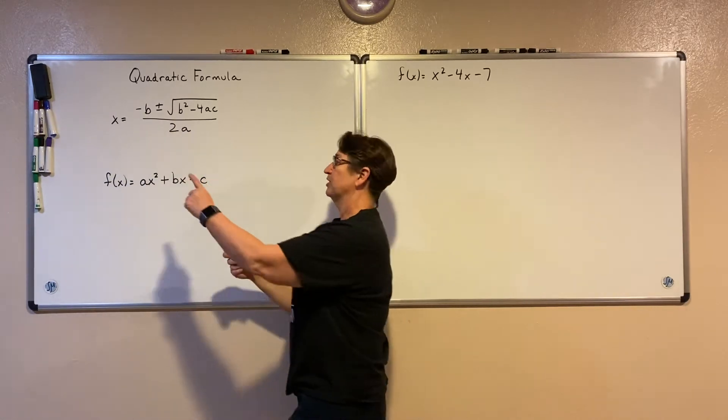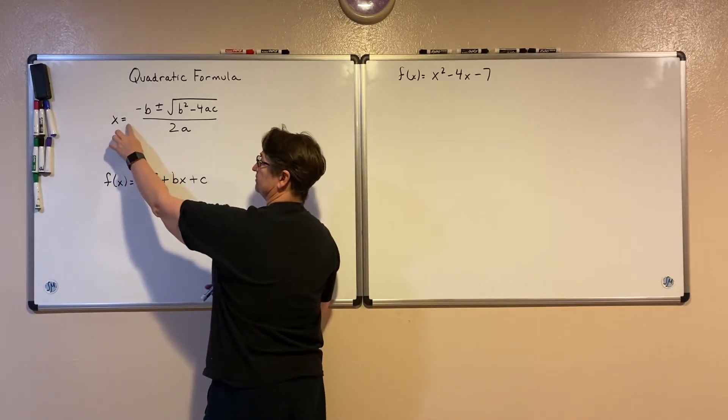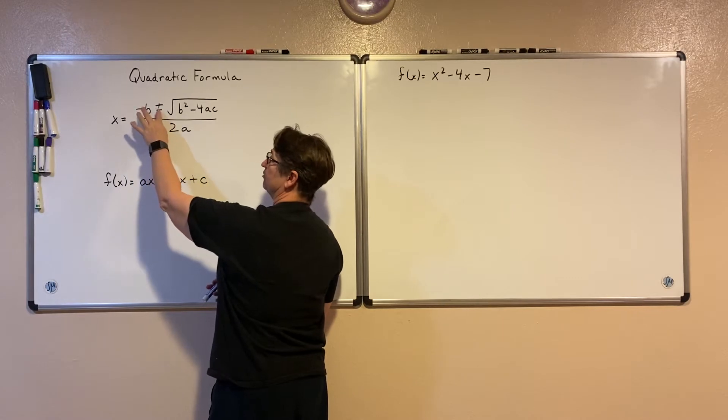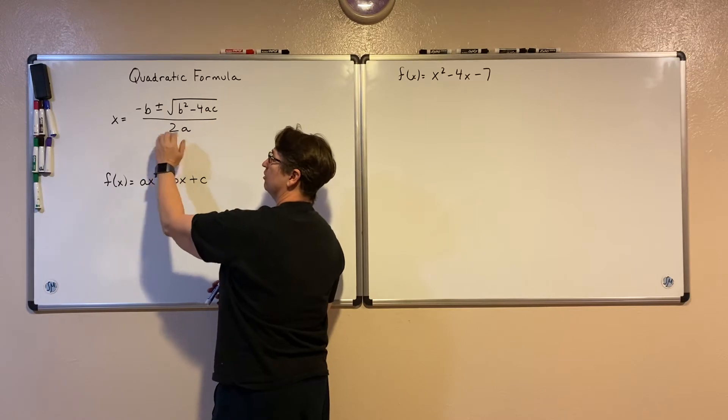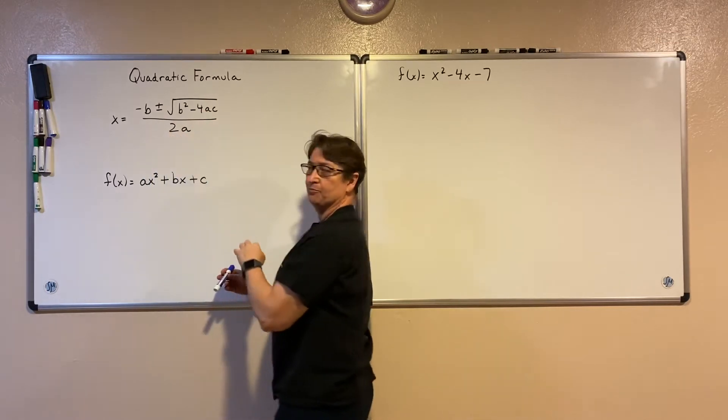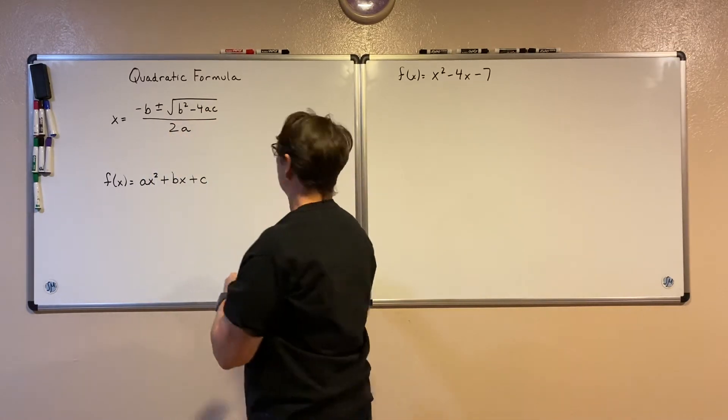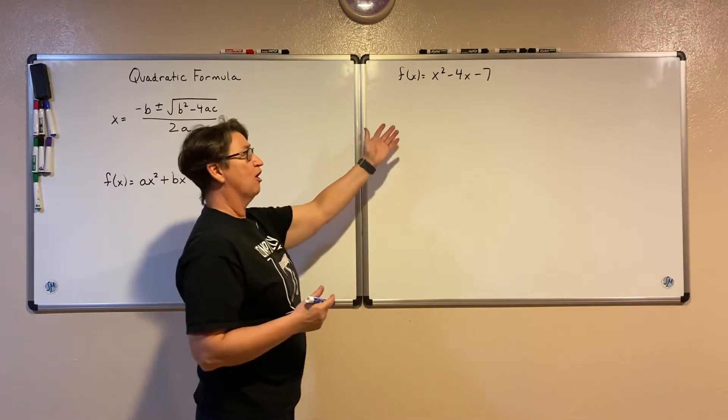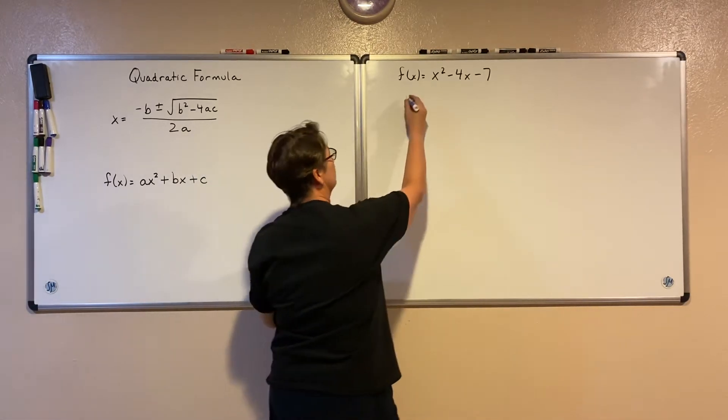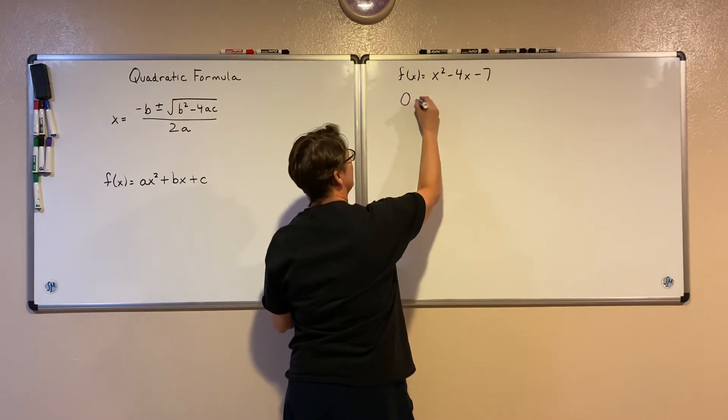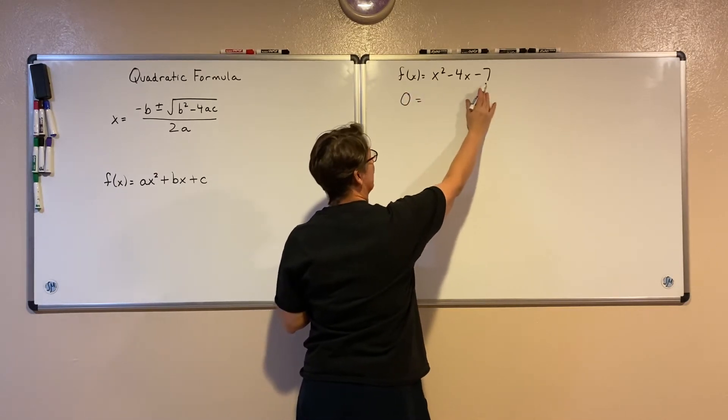The formula goes something like this: x equals negative b plus or minus the square root of b squared minus 4ac all over 2a. So I'm going to use that formula to help me to solve for x when my function is equal to zero in this quadratic function.